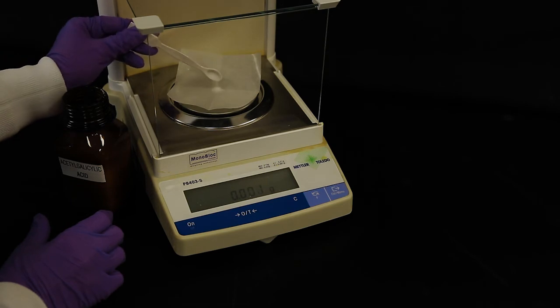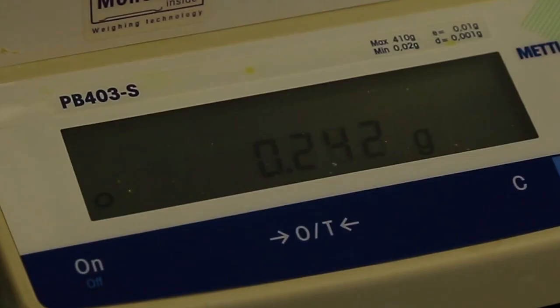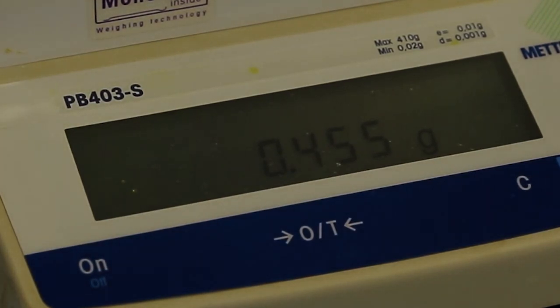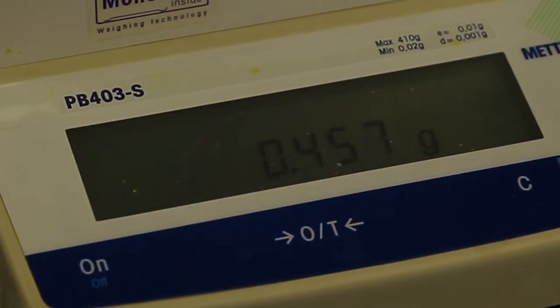When you have placed the desired amount of chemical on the weighing paper and the scale has consistently stayed at one number, record this weight and continue your experiment.